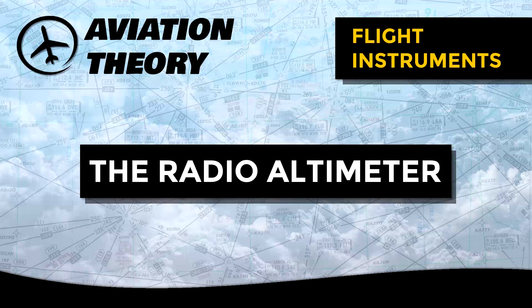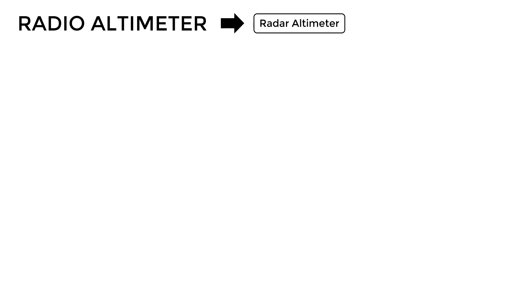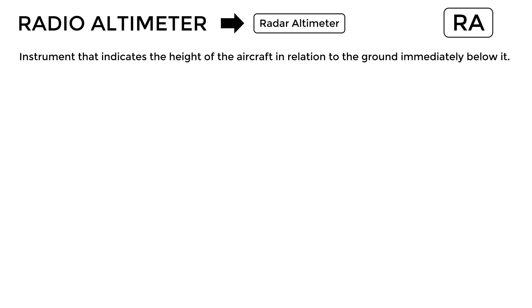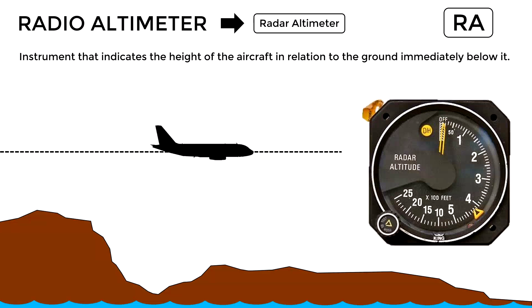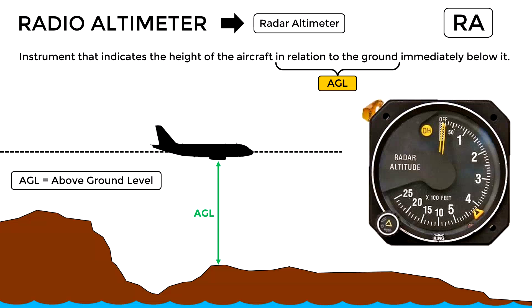Today we will talk about the radio altimeter, which, although not considered a basic flight instrument, can be found in many aircraft. A radio altimeter, also known as radar altimeter and abbreviated as RA, is an instrument that indicates the height of the aircraft in relation to the ground immediately below it. In other words, it indicates the AGL height of the aircraft in real time.